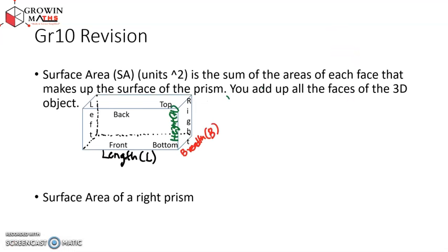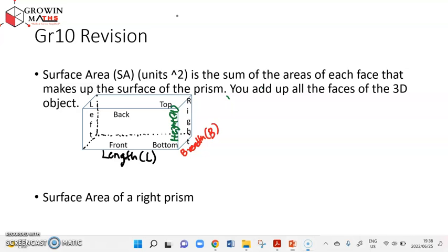We have something called surface area. A surface area is the sum of the areas of each face that makes up the surface of a prism. You are actually just adding up all the areas for all the faces of that 3D object.